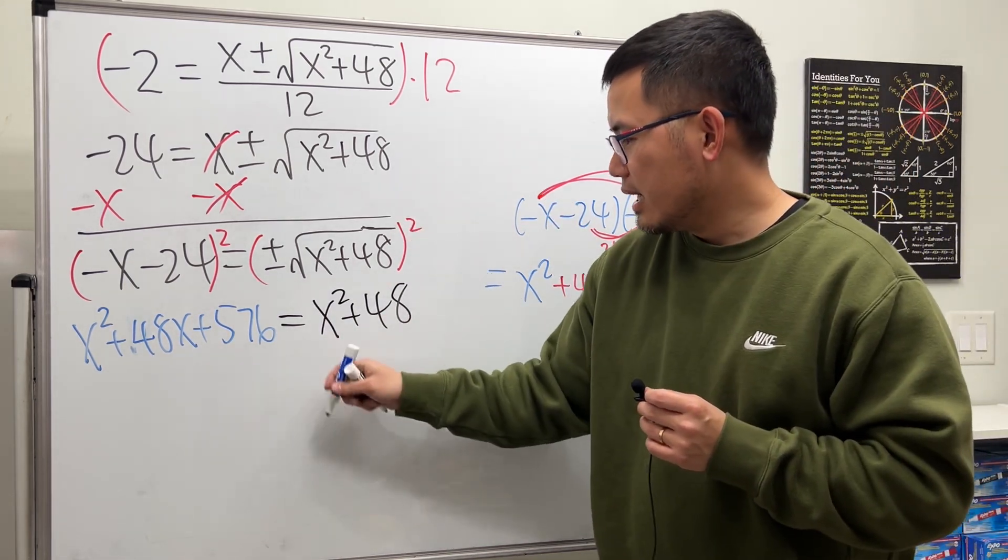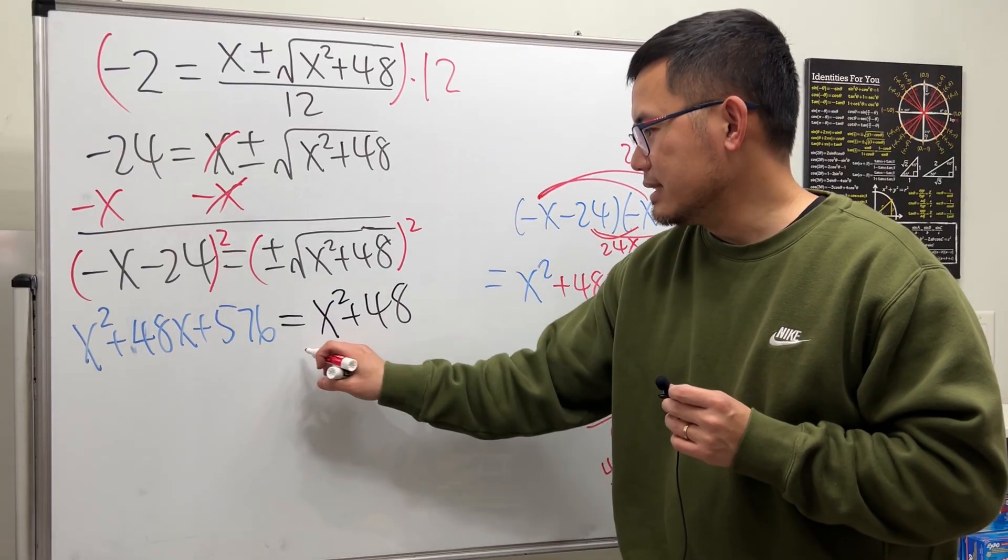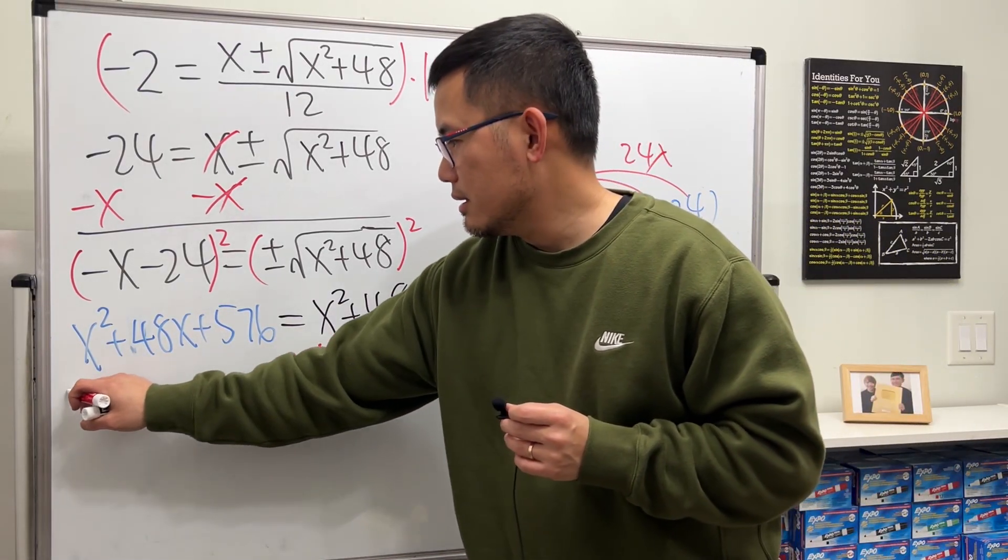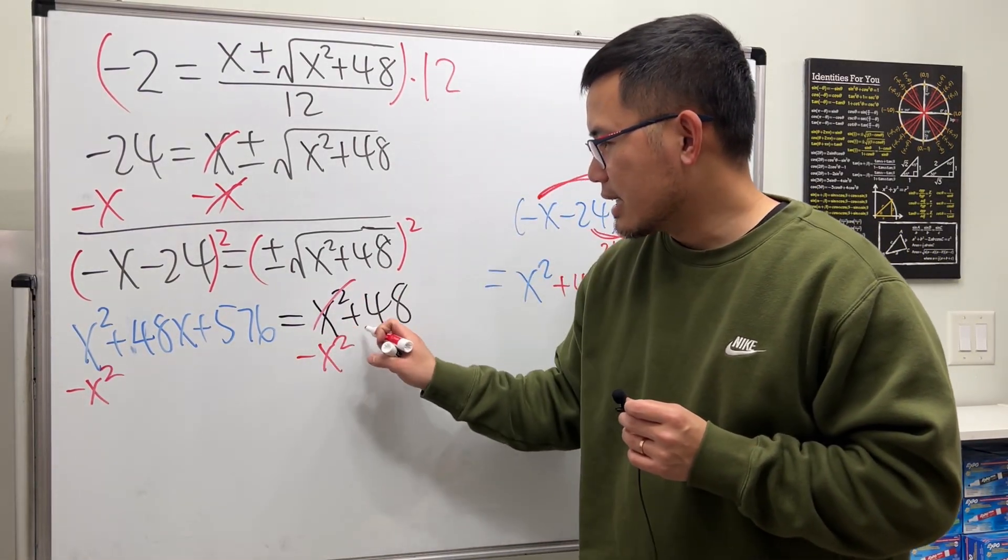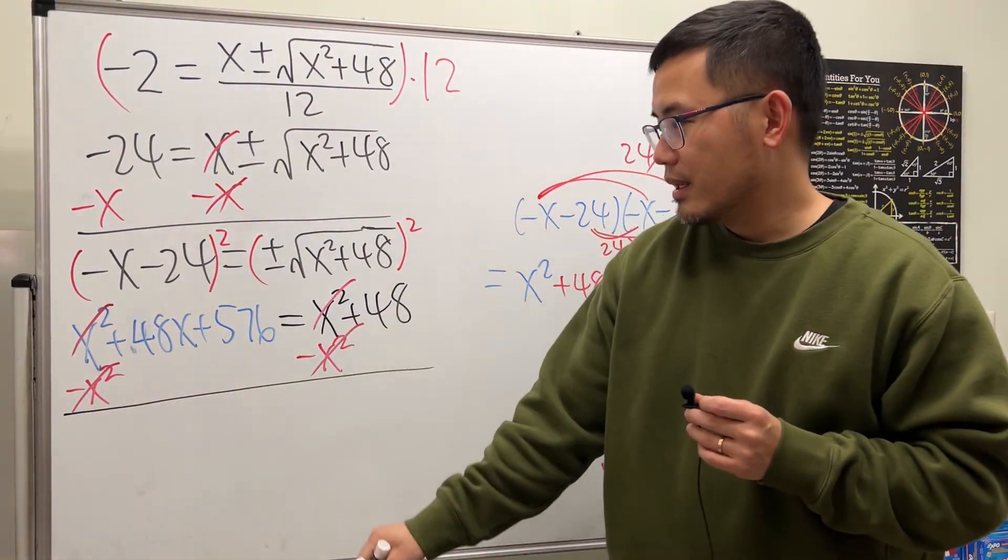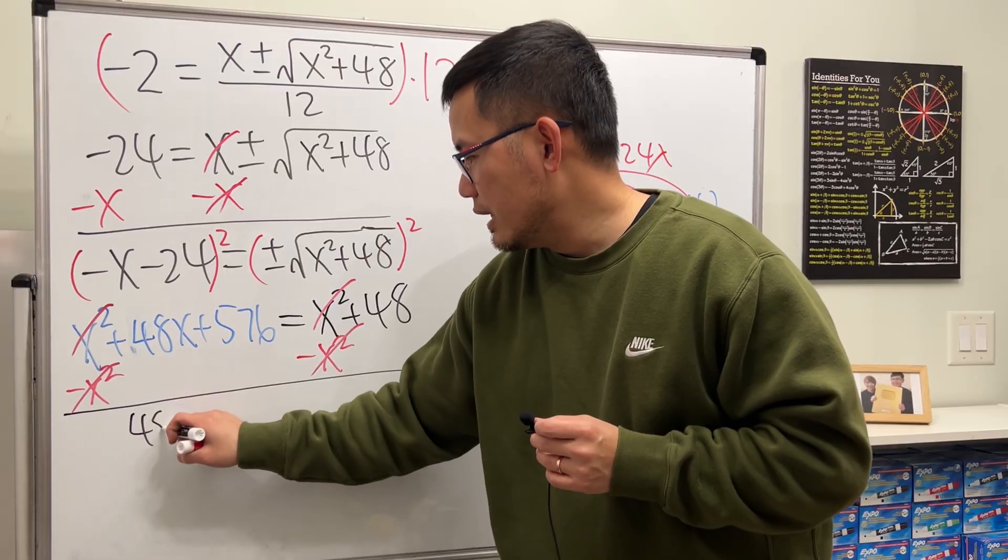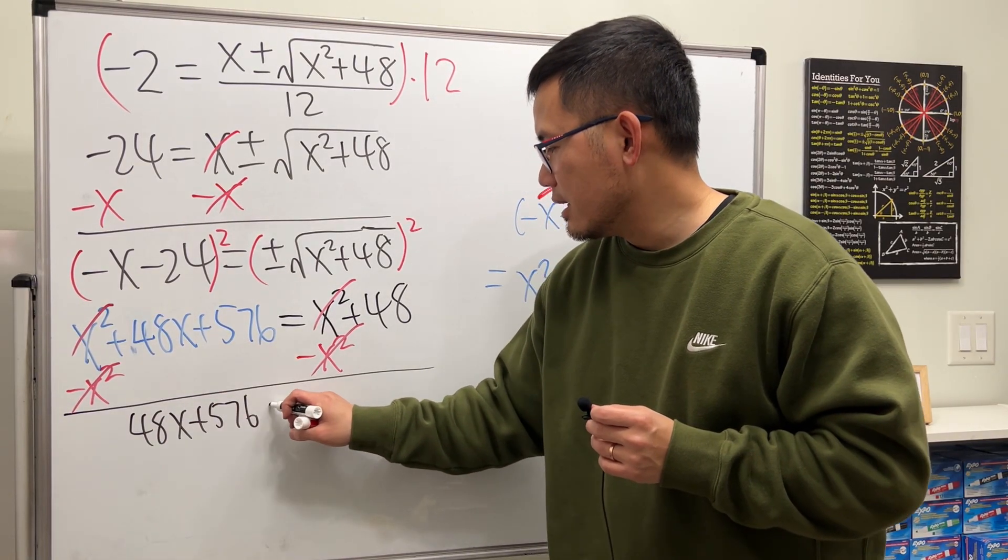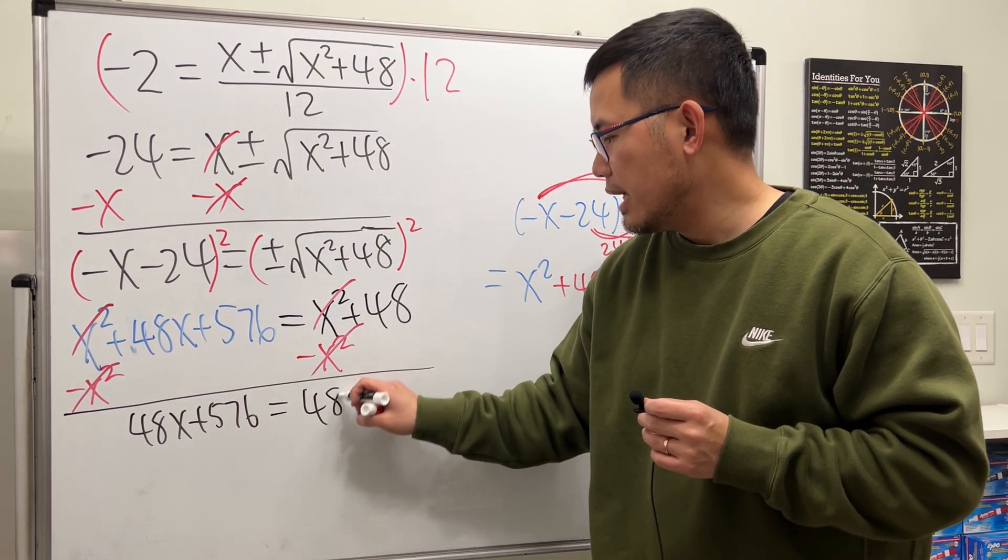Now, we can subtract x squared on both sides. Pretty nice, huh? Now, this and that cancel. And in fact, this and that also cancel. So we will have 48x plus 576 equals 48.